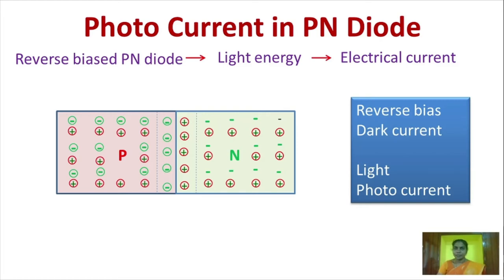Let us see the generation of photocurrent. Consider a PN junction. In the P region, holes are the majority carriers and electrons are the minority carriers. In the N region, electrons are the majority carriers and holes are the minority carriers.